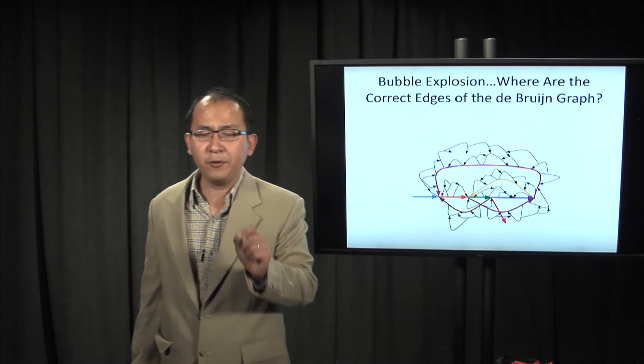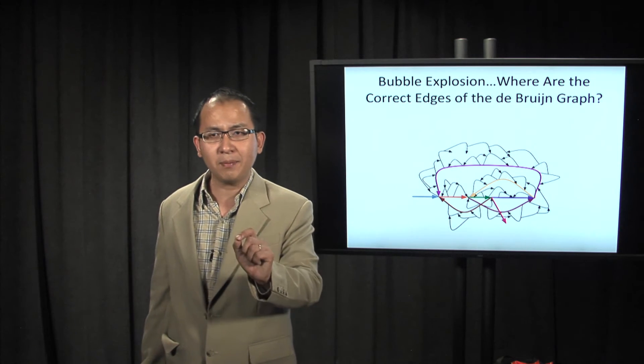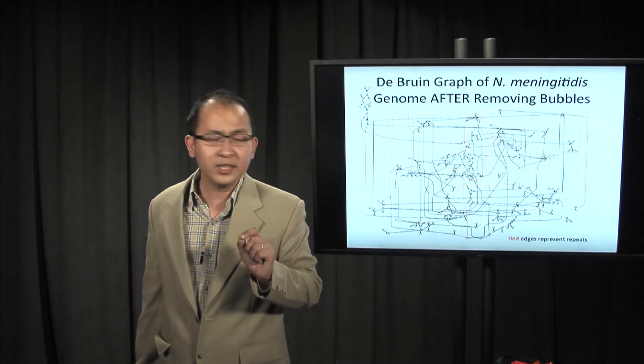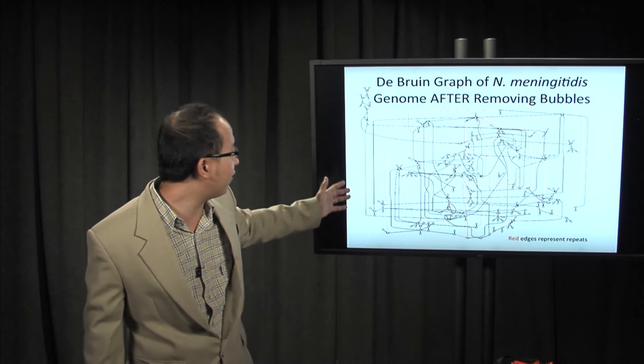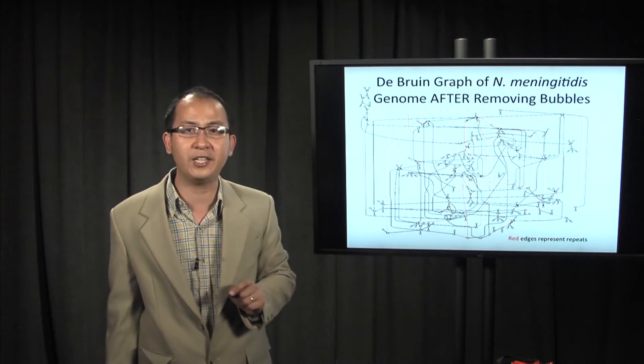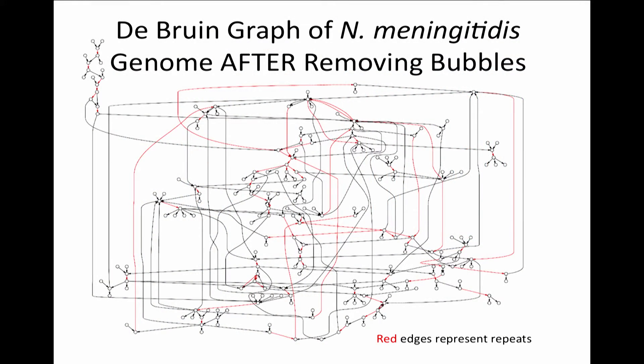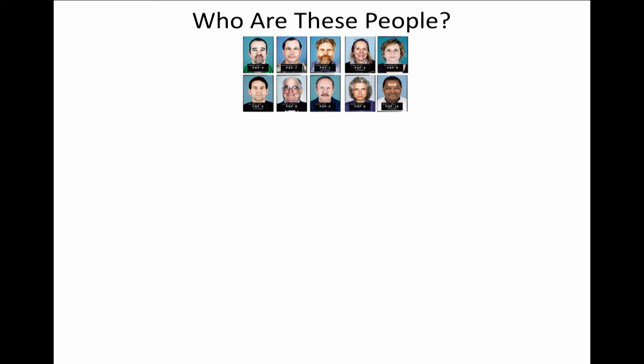Should the graph look very simple after this step? Well, this is the graph of a bacterial genome after simplification. And now it is time to ask and answer the question: who are these people?